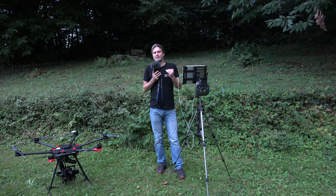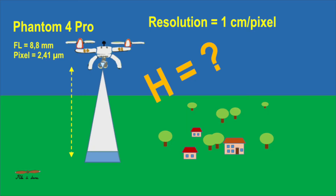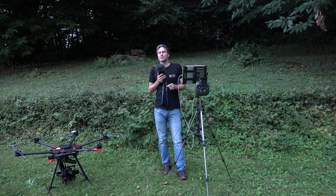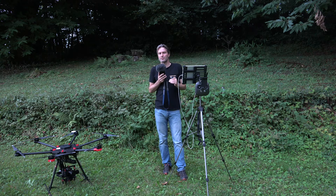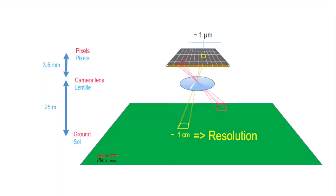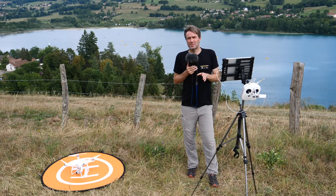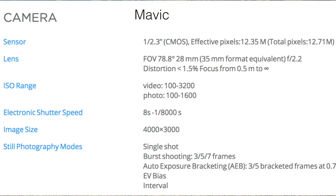More often, we want to know at what altitude to fly to achieve a given resolution. Taking the Phantom 4 Pro and aiming for a resolution of 1 cm per pixel, the formula tells us we need to fly at 36.5 m high. Note that resolution is worse when the resolution value is larger — so a good resolution means a small value.